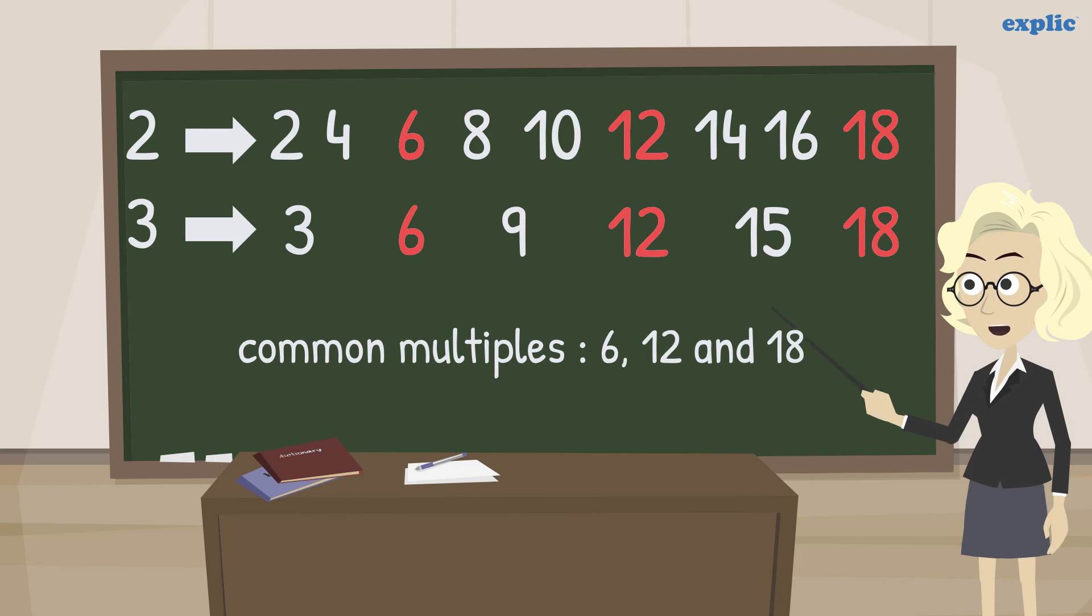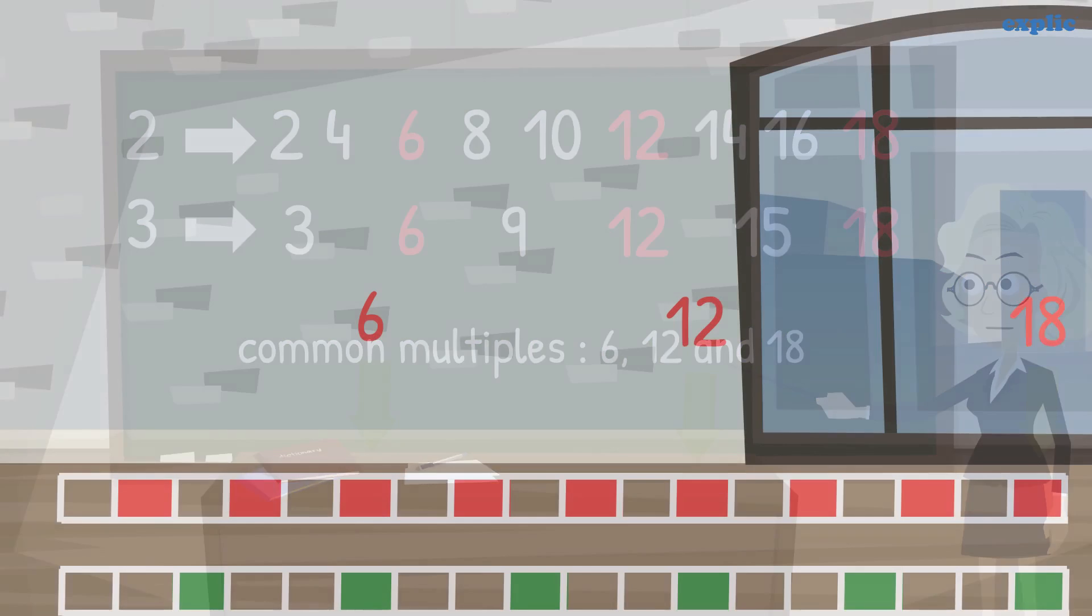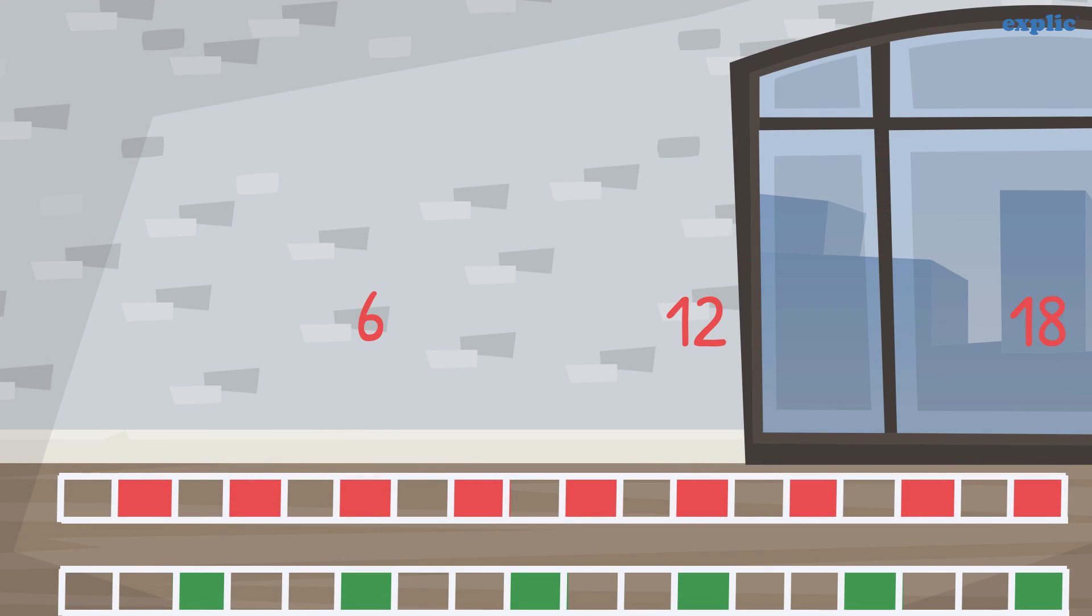Common multiples of 2 and 3 are 6, 12, and 18. We can say that Sam and Sid are meeting at common multiples of 2 and 3.